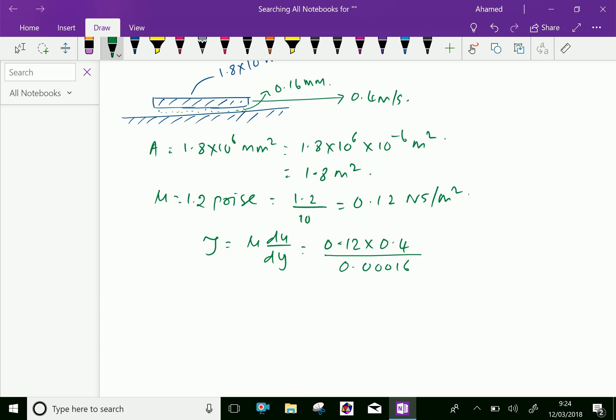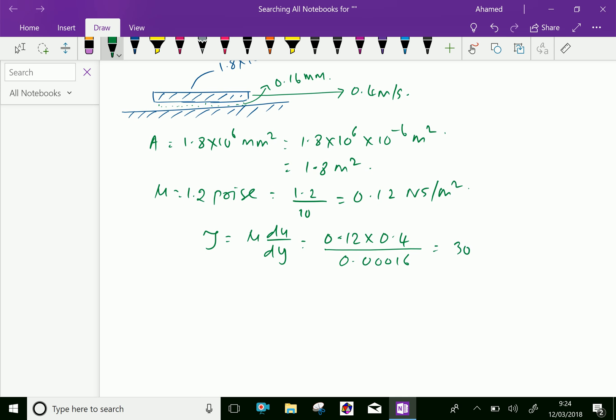Now, let us calculate this value. 0.12 into 0.4 divided by 0.00016 which is equal 300 Newton per meter square.